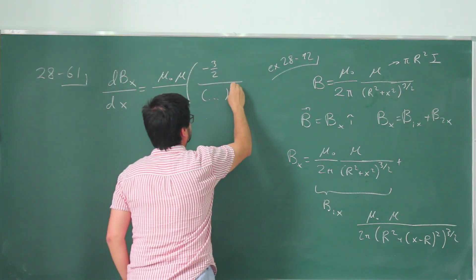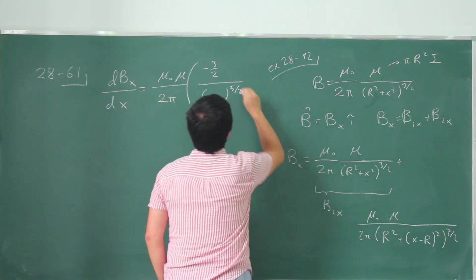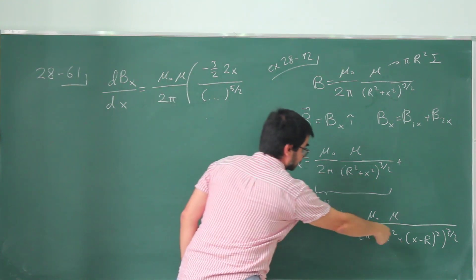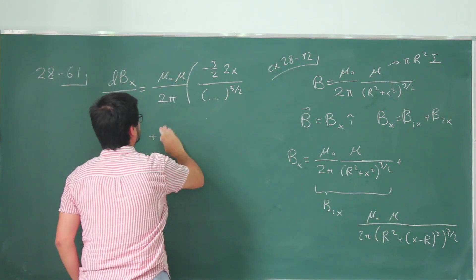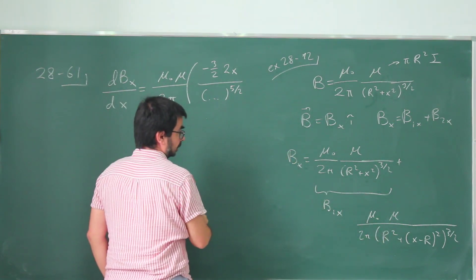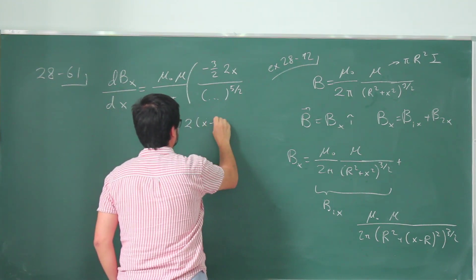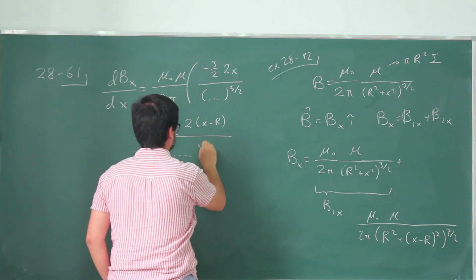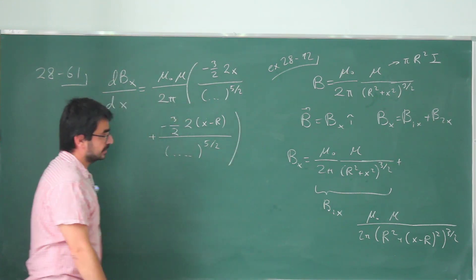Now I'm going to take the derivative of this one. The derivative of this is minus 3 halves, that whole thing to the 5 fifth power. And the derivative of inside, which is just 2x. And then I'll take the derivative of this expression. That looks very similar. So plus minus 3 halves. The derivative of inside is 2x minus R divided by this expression to now 5 fifth power. I just took the derivatives.